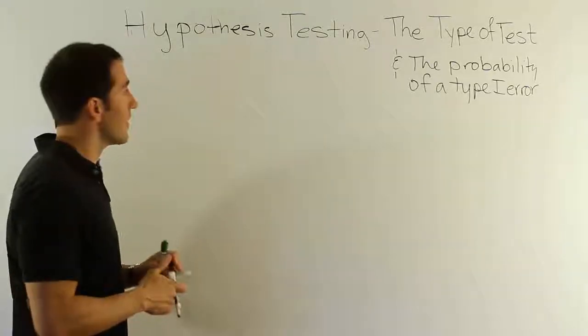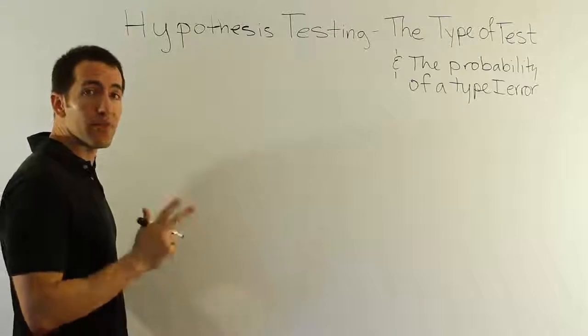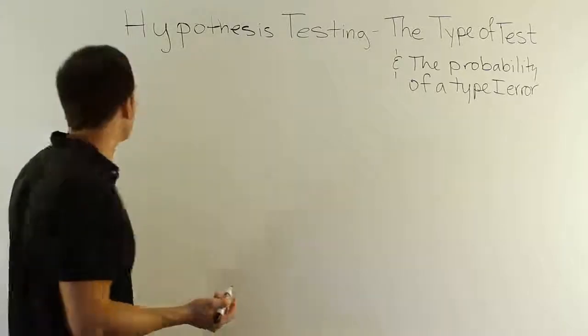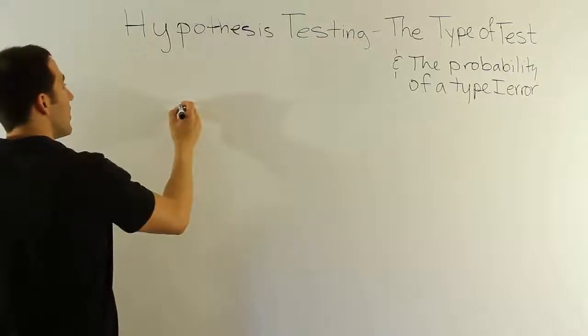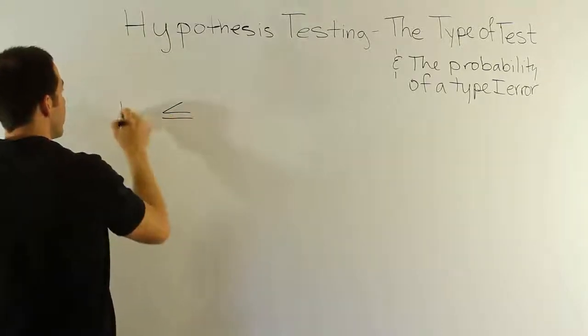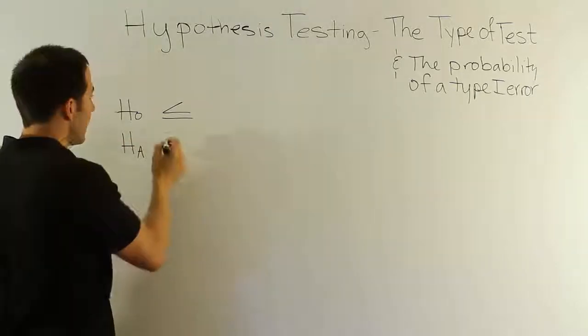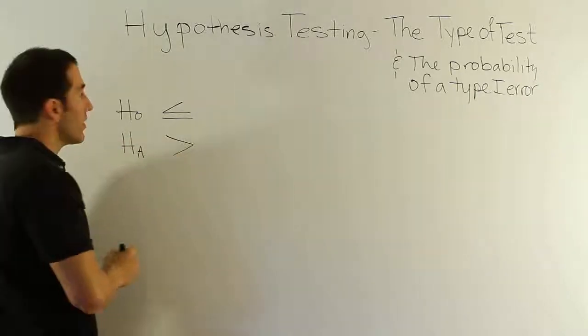All you have to do is consider the fact that there are only three unique combinations of H0 and HA that you can have. You can have a statement that involves less than or equal to for H0, and that would lead to a statement in HA of greater than. That's one scenario.